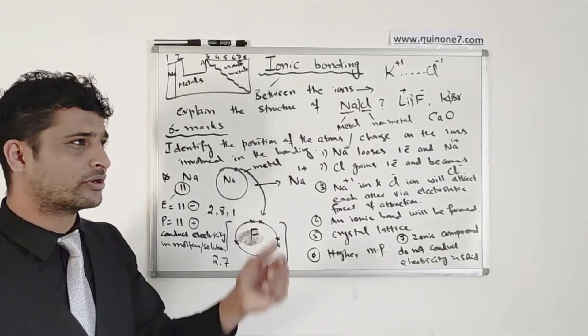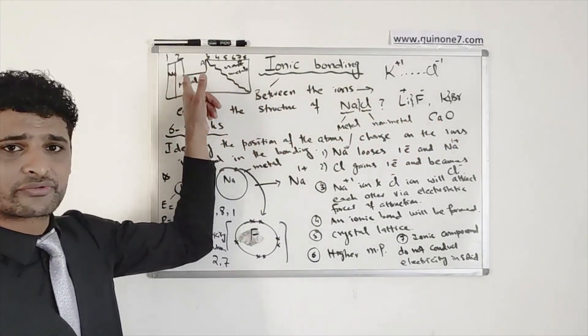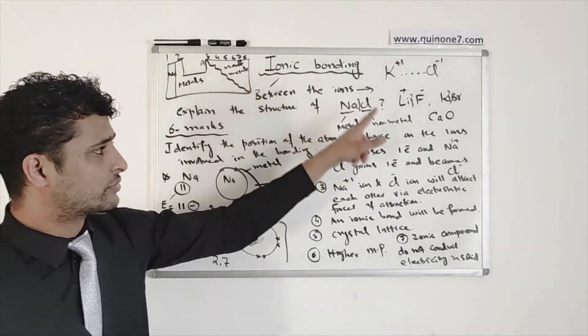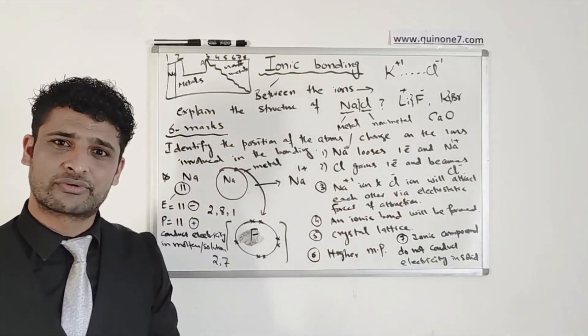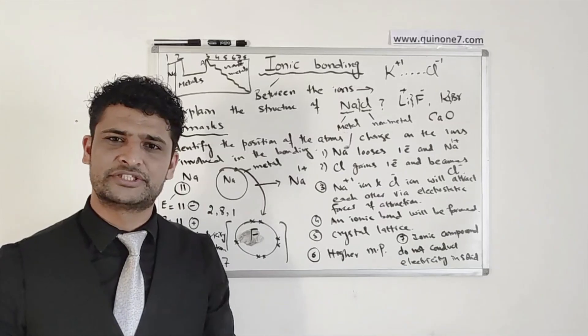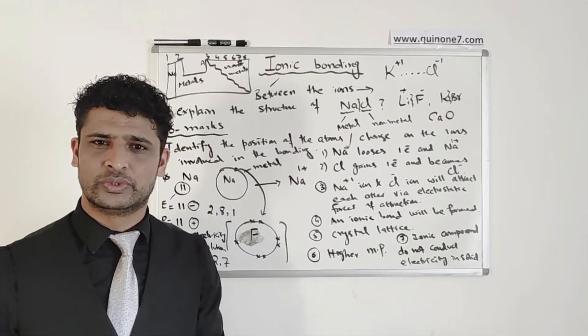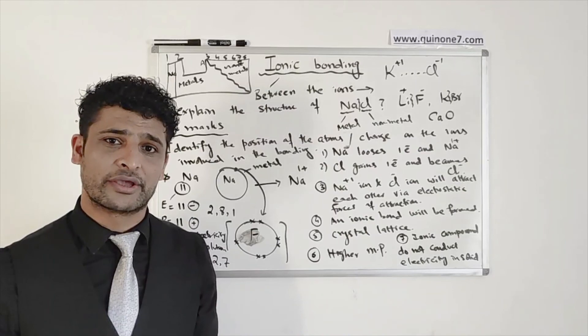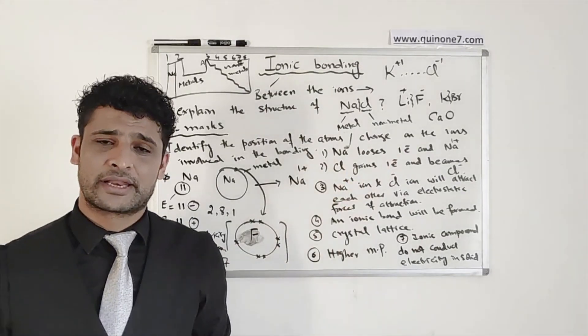If it's a group 1, they will lose one electron. If it's a group 2, like calcium, they will lose 2 electrons. Oxygen belongs to group 6. So it will gain 2 electrons. So you can say calcium will lose 2 electrons, become calcium 2 plus ion. And oxygen will gain those 2 electrons, become oxygen negative 2 ion. And hence, it will make an ionic bond.